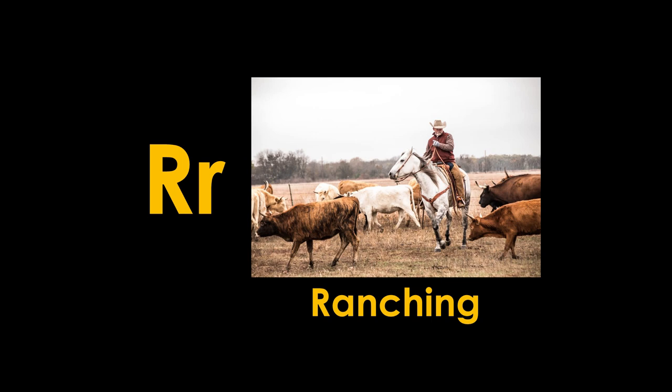R is for ranching. Ranching is very important in Kansas, and cattle is what can be found on most Kansas ranches. Soon after Kansas became a state, people started to bring their cattle here. They discovered that eating Kansas grass made their cattle very healthy, and there have been ranches here ever since. The rancher in this picture is riding a horse, but today ranchers sometimes ride ATVs too. Whatever ranchers ride, they need to be able to move around the ranch to take care of their cattle.